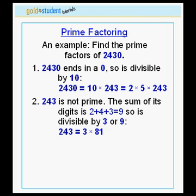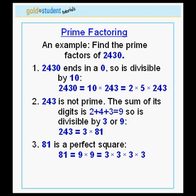You can easily show that 243 is equal to 3 times 81. 81 is a perfect square — 81 is equal to 9 times 9, or in other words, in terms of its prime factors, 3 times 3 times 3 times 3.